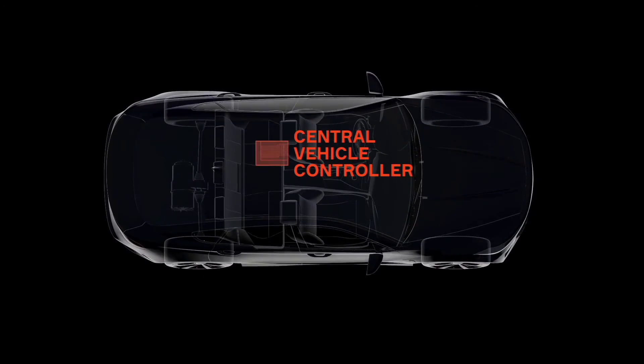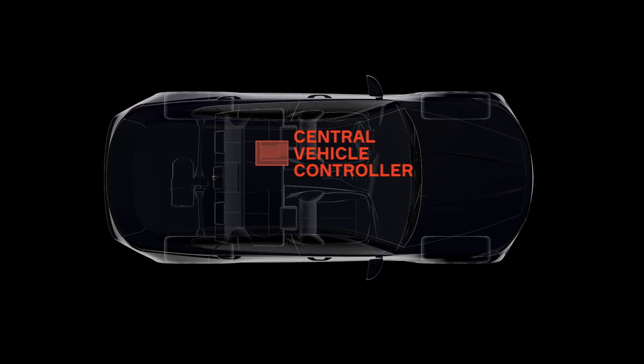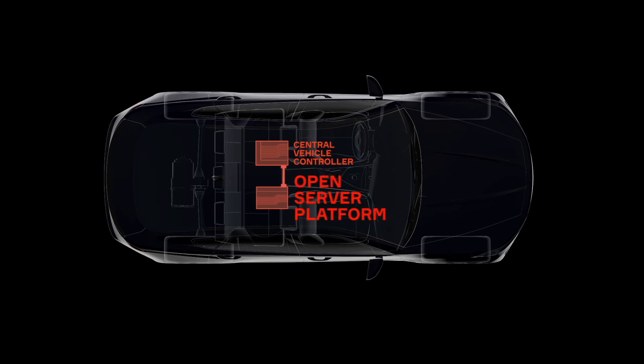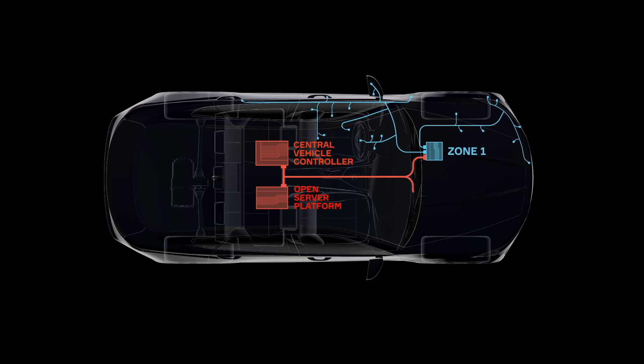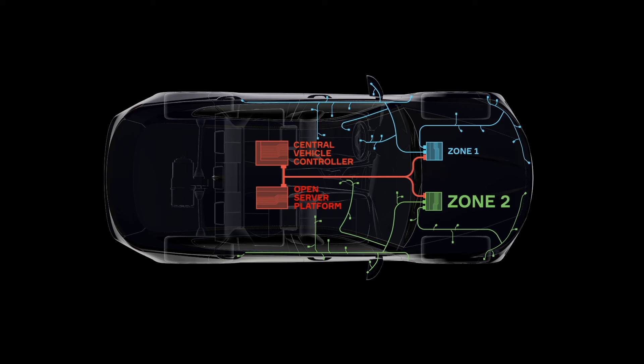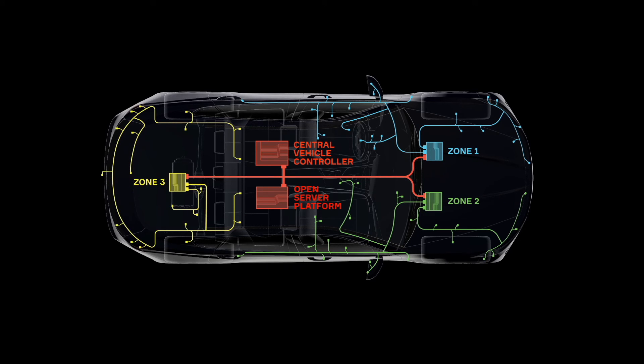The CVC is here to coordinate and synchronize the zone controllers — it's like the leader in a music band, coordinating them and controlling that they execute at the right time, sensing and actuating. It also routes data to the right zone, because a zone doesn't know what the other zone has, so the CVC routes that information to the right place.